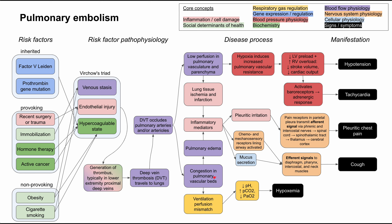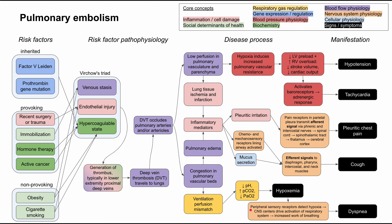Lastly, the congestion in the pulmonary vascular beds results in a ventilation-perfusion mismatch, also called a VQ mismatch. This results in respiratory gas dysregulation: the patient will have a low pH resulting from high PCO2 — that is, high retention of carbon dioxide. Because you're not perfusing and ventilating well, you will also have a low PaO2, which by definition is hypoxia. When the patient has hypoxia, peripheral sensory receptors detect it, and the CNS is triggered to increase respiration. This results in an increased work of breathing, and the patient may feel this as dyspnea or shortness of breath.